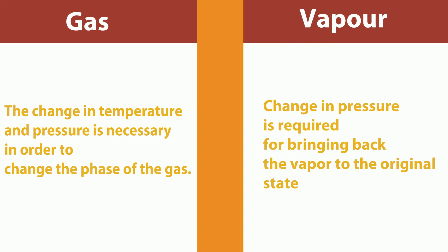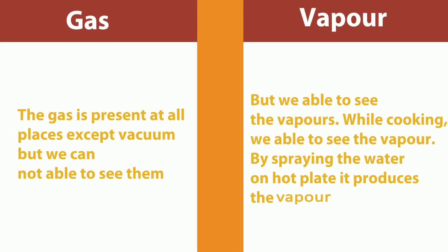Gas is present everywhere except in a vacuum, but we cannot see it. However, we can see vapor. While cooking, we can see vapor, and by spraying water on a hot plate, it is converted into vapor that we can see with the naked eye. These are the simple differences between gas and vapor.